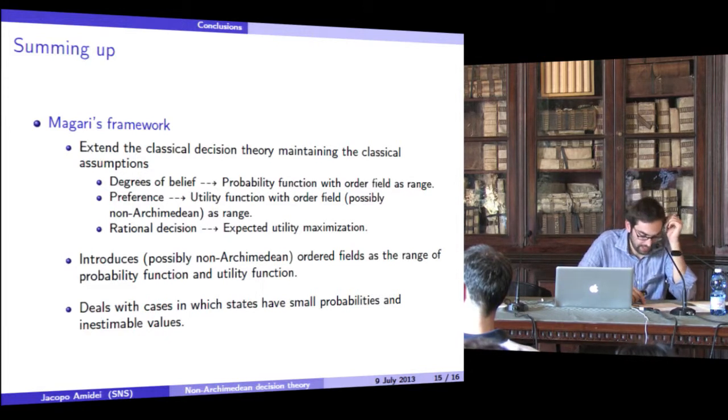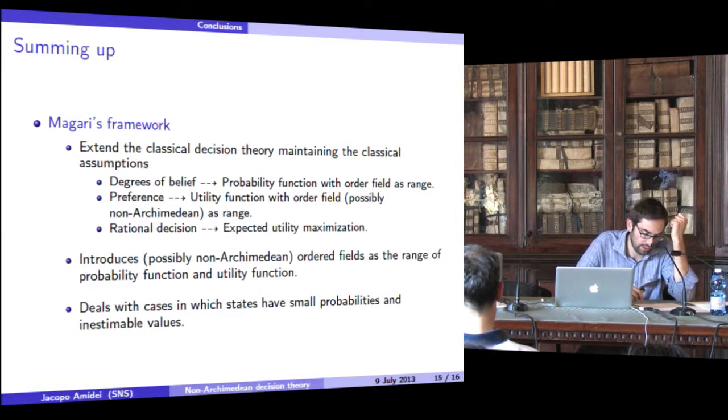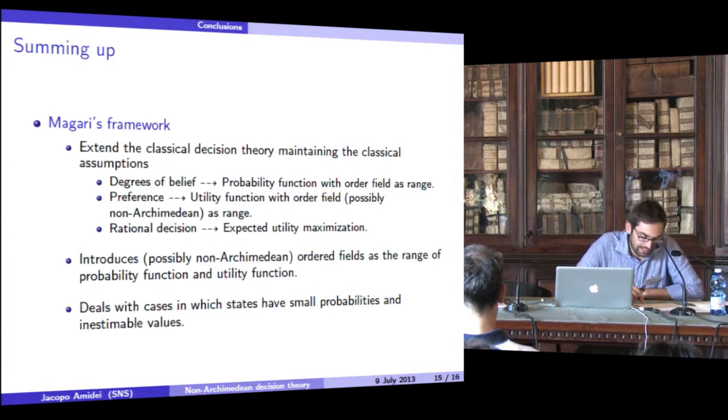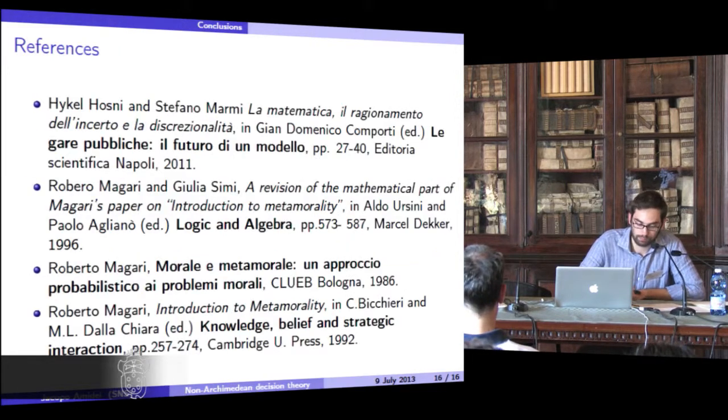So Magari's decision theory is an initial attempt to deal with those events that, in Taleb's words, we can call black swans. That is, events characterized by low probability and massive impact.